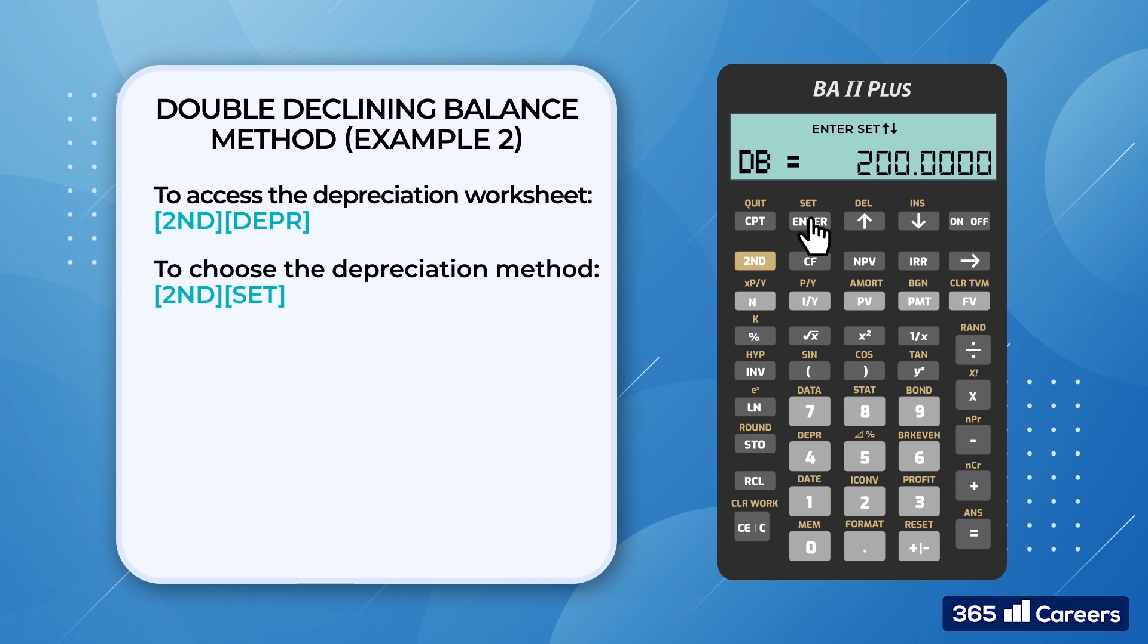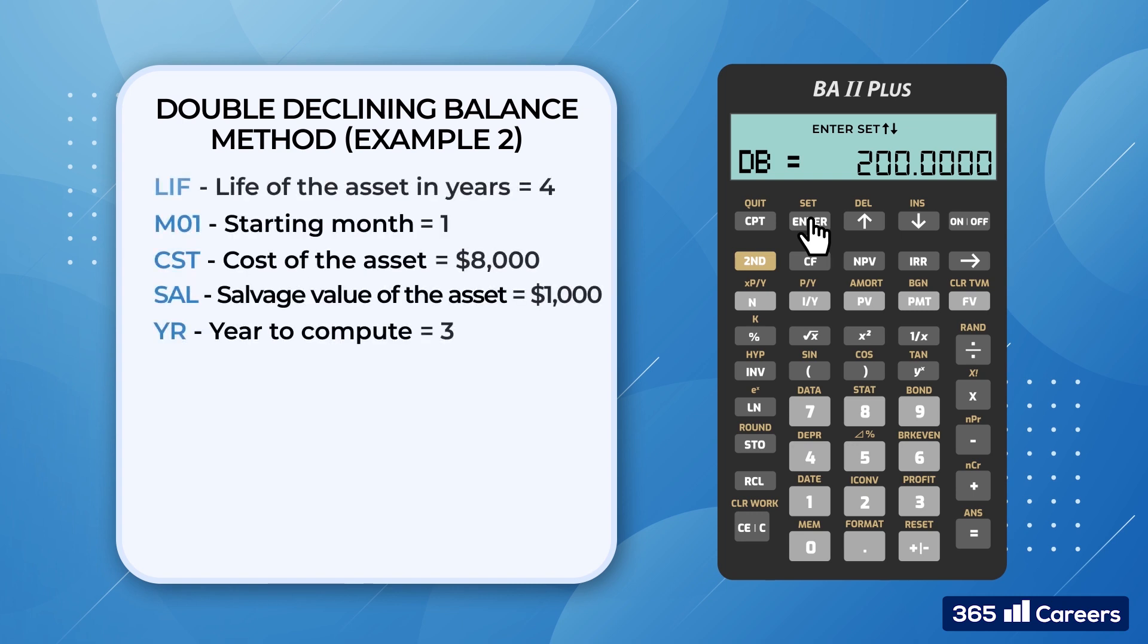As we could see, by default, it equals 200%. This is the acceleration factor that approximates the pattern of the asset's wear. By definition, the double means 200% of the straight line rate of depreciation. So, we leave this figure as it is.